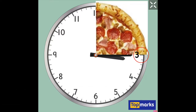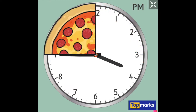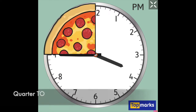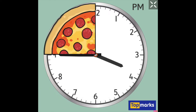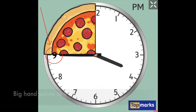Today, we will place a quarter on the opposite side of the clock. Where do you think the big hand will point to for a quarter-to time? The answer is 9 — the number directly opposite 3.